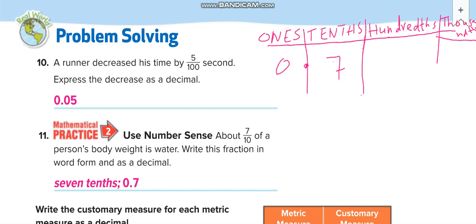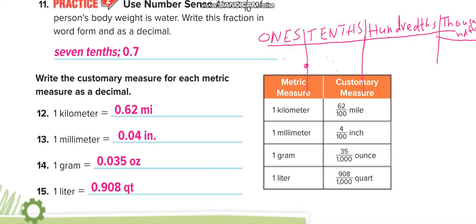Let me erase the numbers first and then we'll move down towards the next questions. Here again they give you some customary units and they want you to write these fractions in decimal. Let me explain: 62 over 100 is 0.62, 4 over 100 is 0.04.